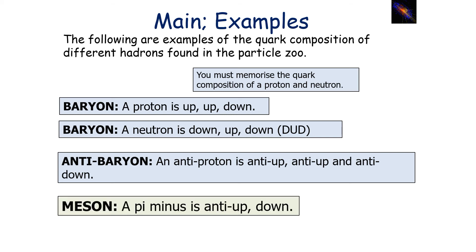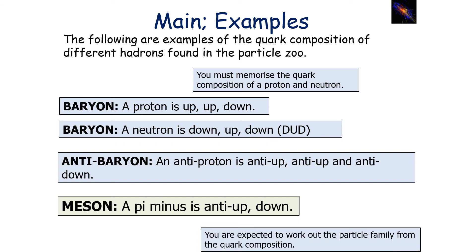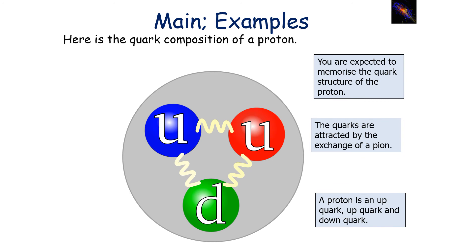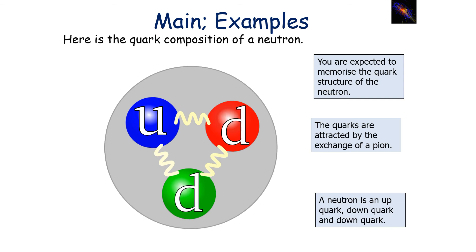For a meson, there is one antiquark and one quark. For example, a pi minus is anti-up, down. You're expected to work out the particle family from the quark composition. A proton is up, up, down — the quarks are attracted to each other by the exchange of a gluon or the exchange of a pion. A neutron is down, up, down, and these quarks are attracted to each other by the exchange of a pion.